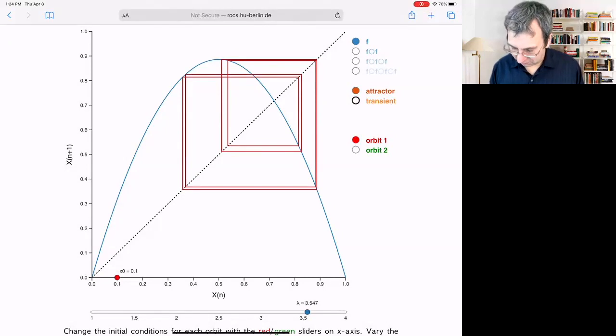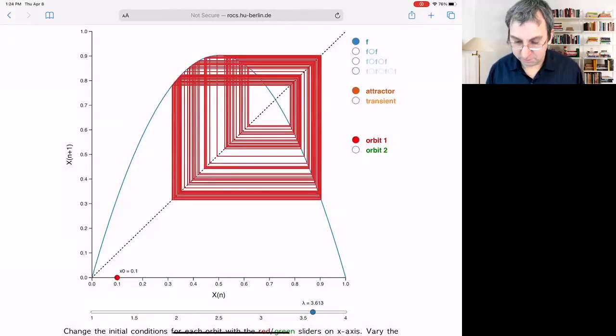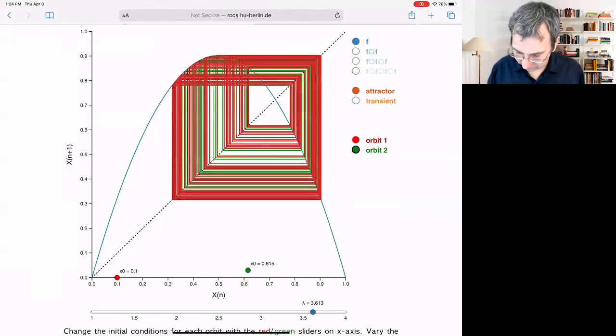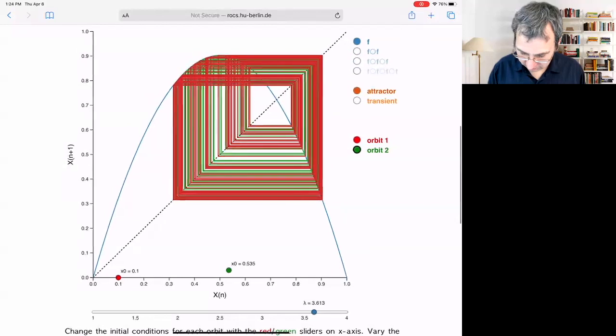We're getting really close to that R infinity. This is definitely in the chaotic regime now. So it's calling this an attractor, but it would be different if I start with a different initial condition. It's chaotic.